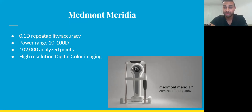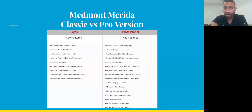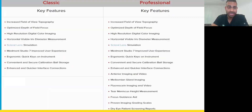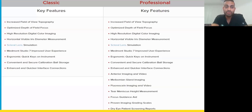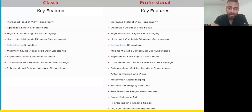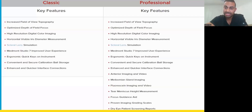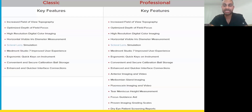The high-resolution imaging is fantastic — I'll show you some images shortly. There are two versions: Classic and Professional. The biggest difference in my opinion is anterior segment imaging and dry eye information. The Pro version includes meibomian gland imaging, fluorescein imaging, tear meniscus height, and dry eye screening reports. Both work well as topographers for ortho-K, but I prefer the Pro version.